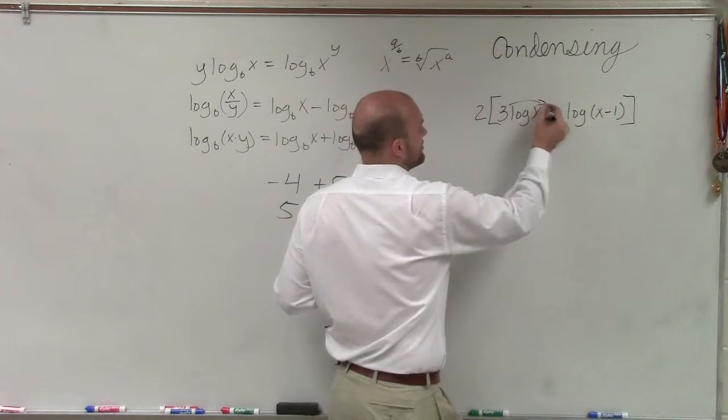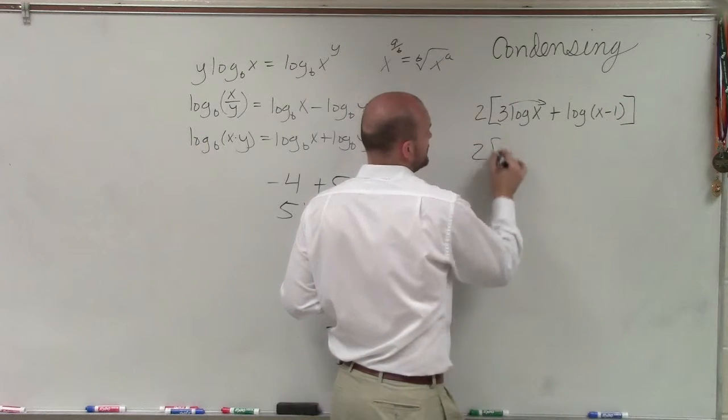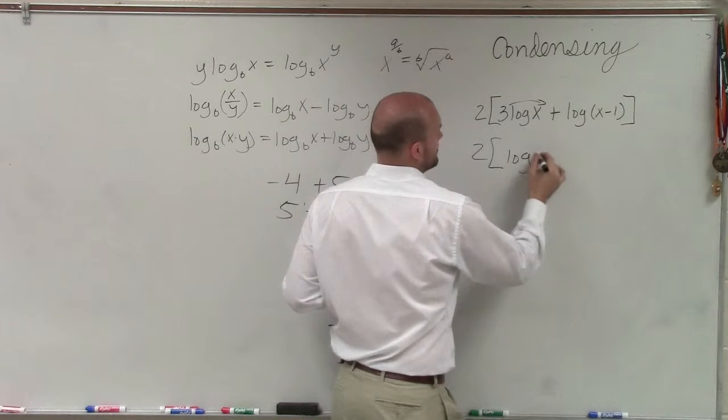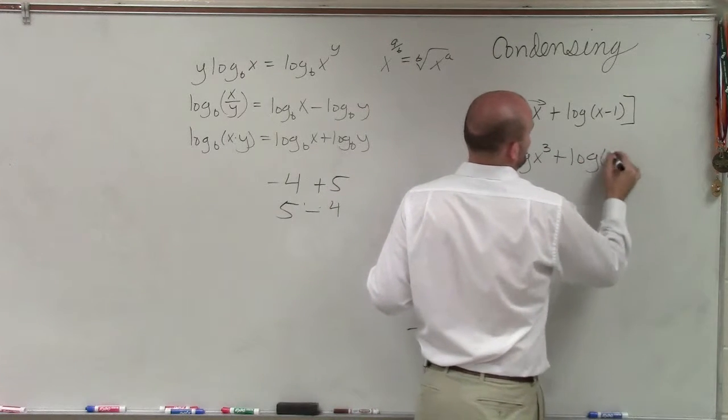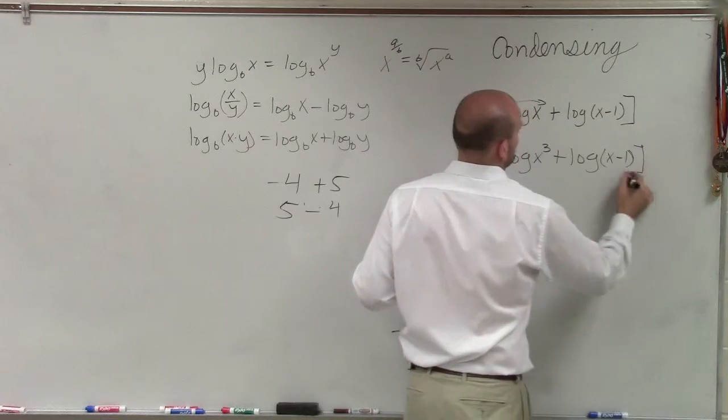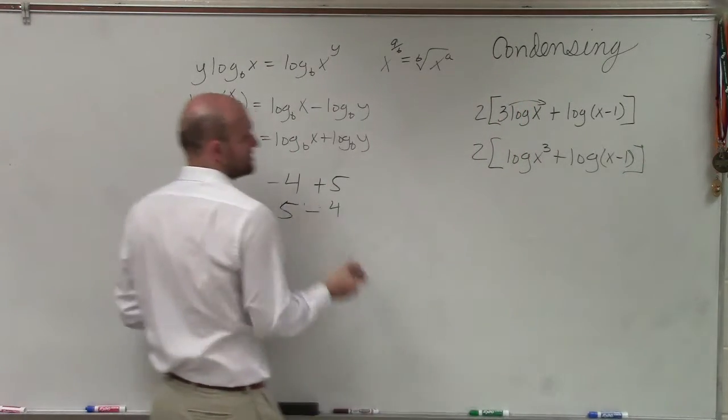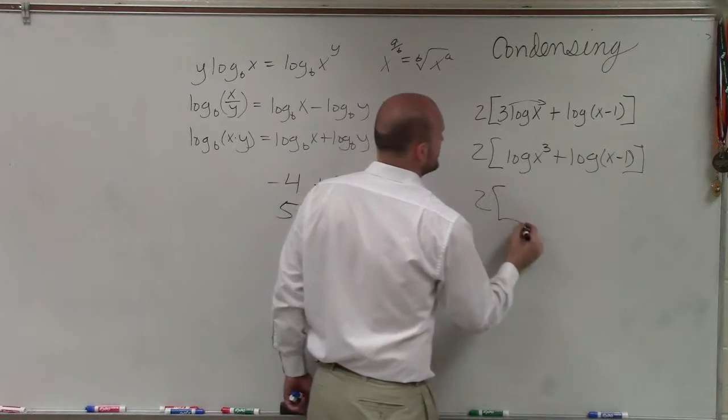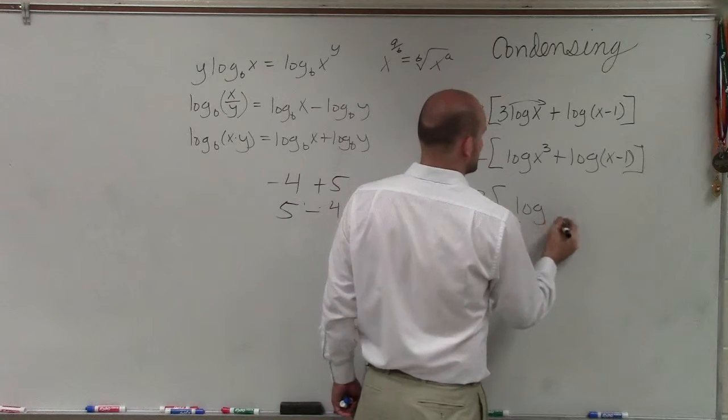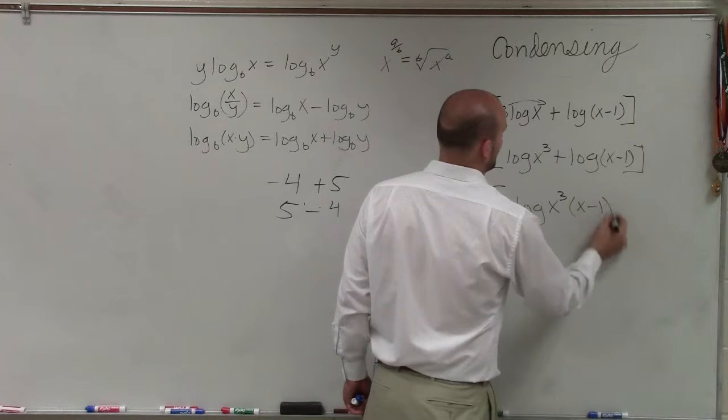So the first thing I can do is I can bring that x cubed up there, so I have 2 times log base x cubed plus log times x minus 1. Now I can multiply these. Since I have these sum, I can rewrite it as the product. So therefore, it's going to be 2 times log of x cubed times x minus 1.